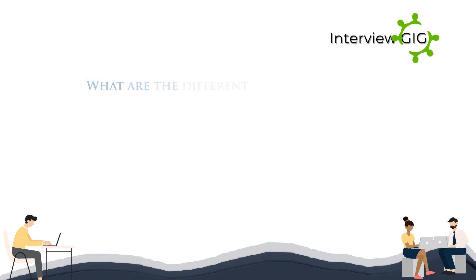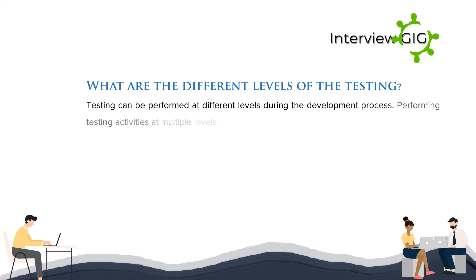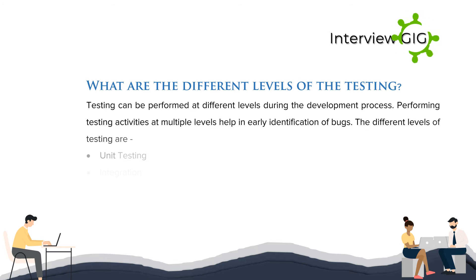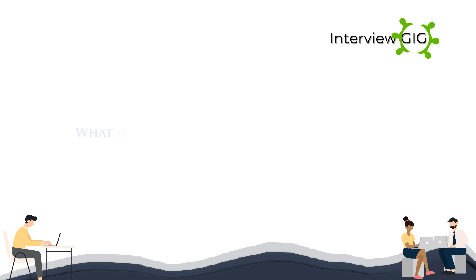What are the different levels of testing? Testing can be performed at different levels during the development process. Performing testing activities at multiple levels helps in early identification of bugs. The different levels of testing are unit testing, integration testing, system testing, and acceptance testing.